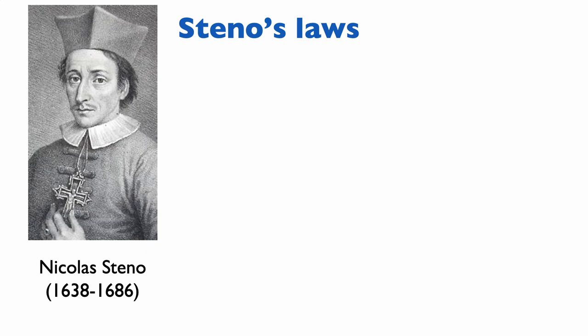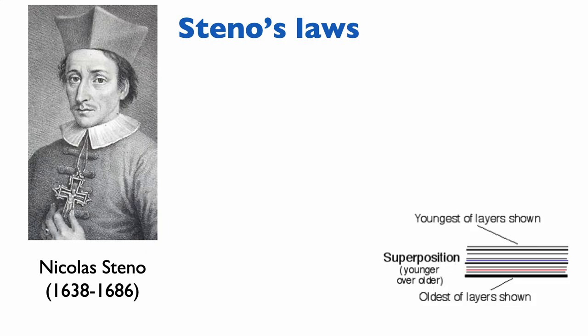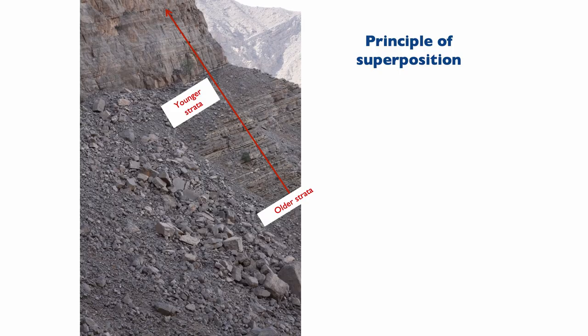Steno's first principle is known as the principle of superposition. It recognizes that because sediments were deposited in the ocean on a flat surface, the layers below are older than the layers above. In the 17th century this was a revolution. We can look at this principle in the Dolomites, where Nicola Steno lived — these are Triassic-age limestone deposits.